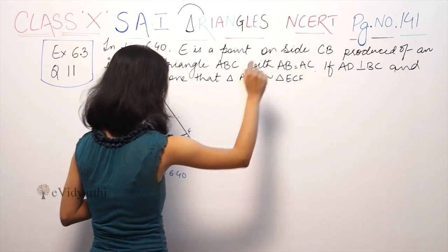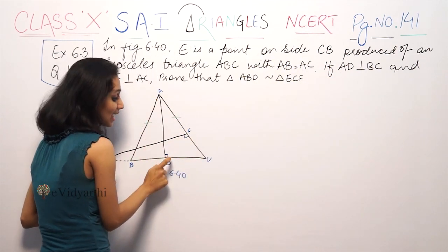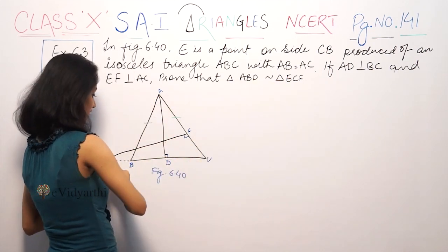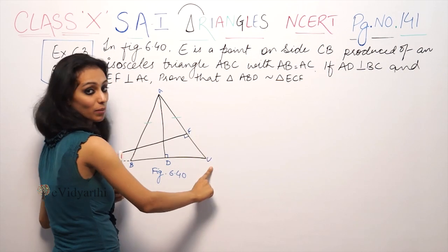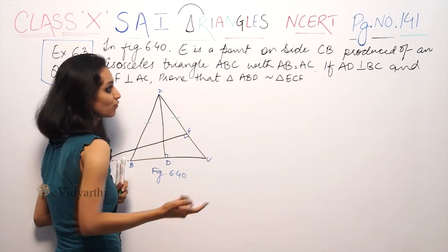If AD is perpendicular to BC, that means this angle is 90 degrees. And EF is perpendicular to AC. That means this angle is 90 degrees. These are signs of 90 degree angles.